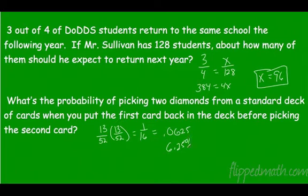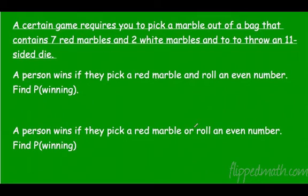Alright, a certain game requires you to pick a marble out of a bag. It has seven red marbles, two white marbles, and to throw an 11-sided die. So they win if they pick red and roll an even number. So red is seven out of how many total? Seven, two, two... nine. And means we multiply. So even number, let's see: two, four, six, eight, ten. So one, two, three, four, five out of 11 are even.